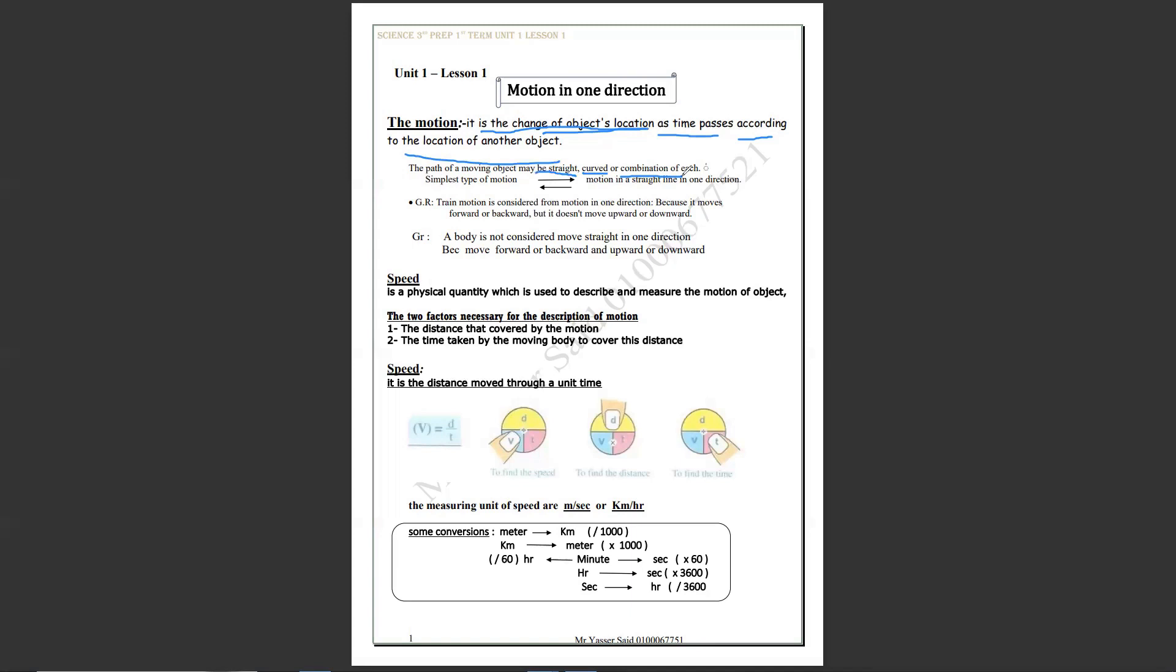Now, our first question. What's the simplest type of motion? Guess: straight, curve, or combination? That's right. It's straight. But make it simple. Straight in one direction. It's not two directions. Like train. Train moving from Cairo to Alex. This is straight in one direction. Or return back. Moving forward or return back from Alex to Cairo. This is also straight in one direction.